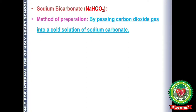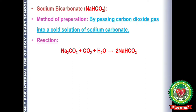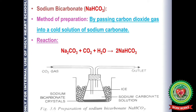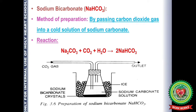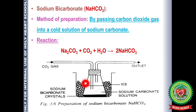The next preparation is sodium hydrogen carbonate (NaHCO₃). Pass CO₂ gas into a cold solution of sodium carbonate: Na₂CO₃ + H₂O + CO₂ → 2NaHCO₃. Dissolve 5 g of anhydrous sodium carbonate in 25 cm³ of distilled water. Cool the solution in a freezing mixture, then pass CO₂ gas through it. Crystals of sodium bicarbonate appear. Filter the crystals and dry them in the folds of filter paper to obtain sodium hydrogen carbonate.